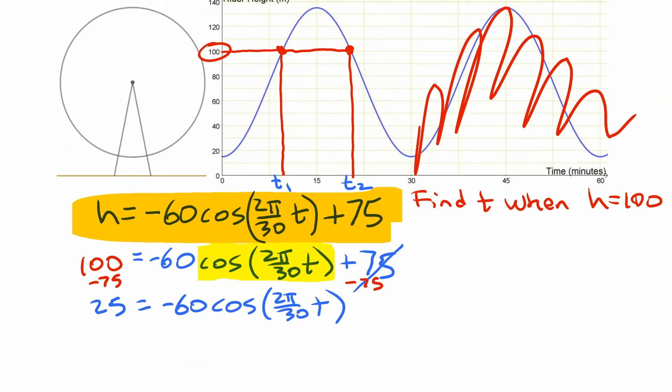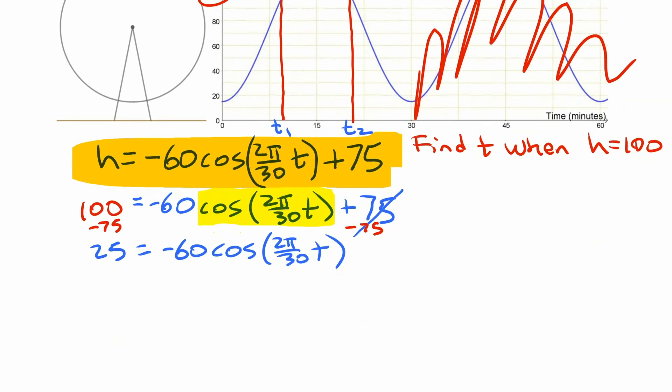This is going to make that disappear, and then on the other side, we have 100 minus 75 is 25, and then we have this part that remains here, cosine of 2π over 30 times time. And to keep going and isolating that expression, to get rid of our negative 60, you don't add 60, it's multiplied in here. So we divide by negative 60. So on the left you have negative 25 over 60, and on the right we just have cos 2π over 30 times time.